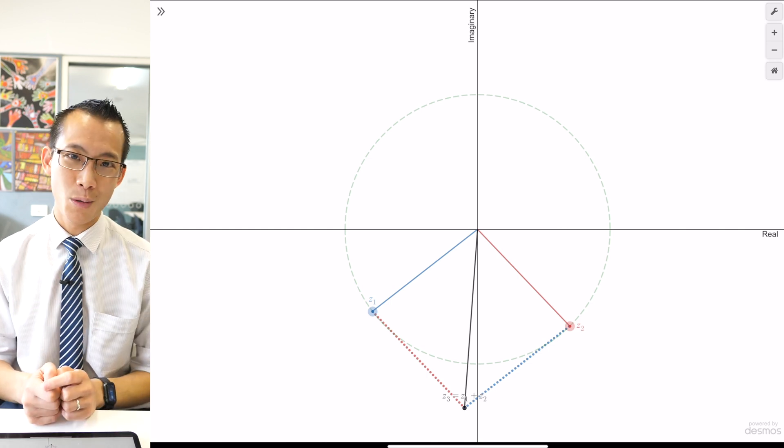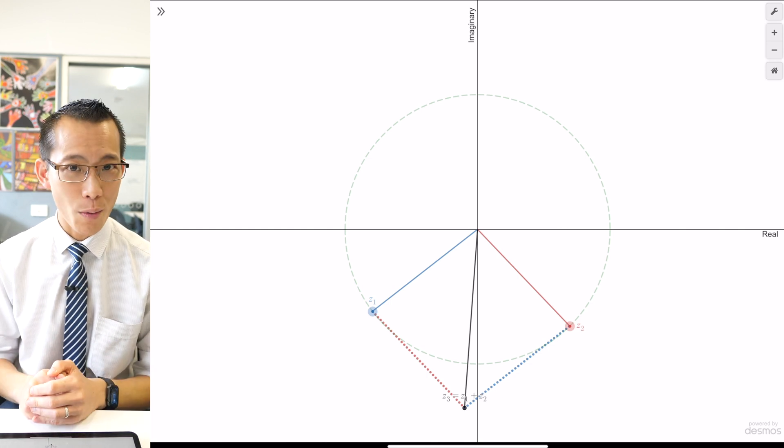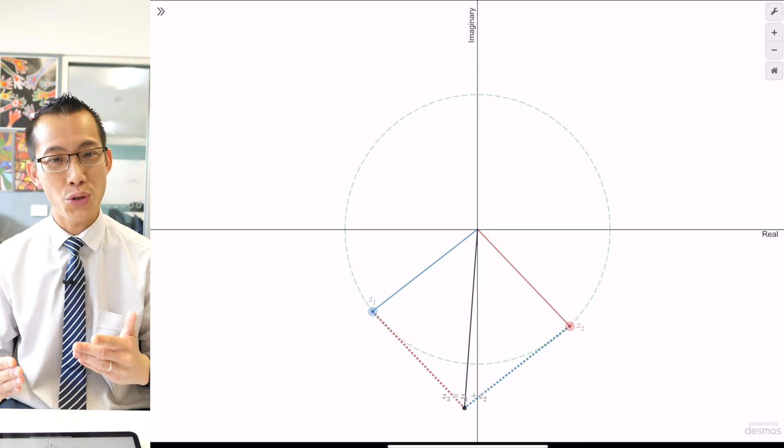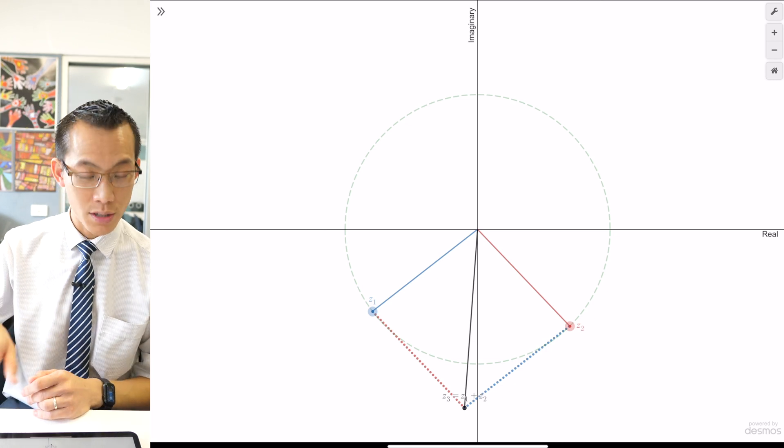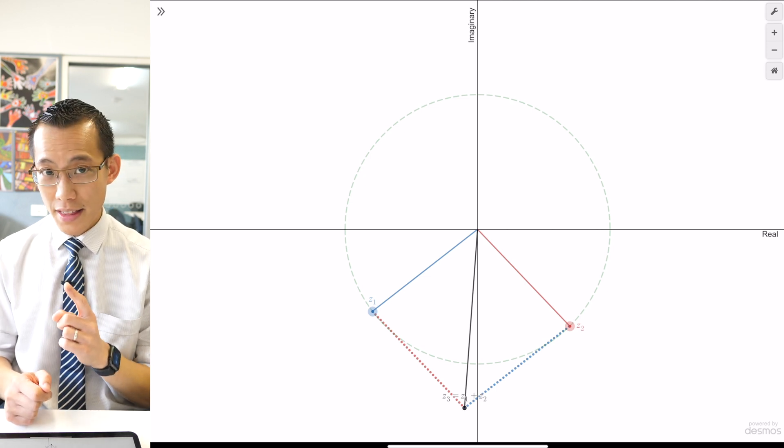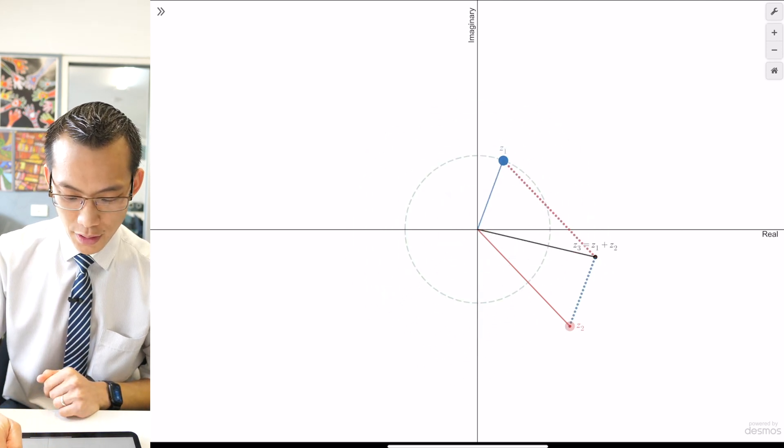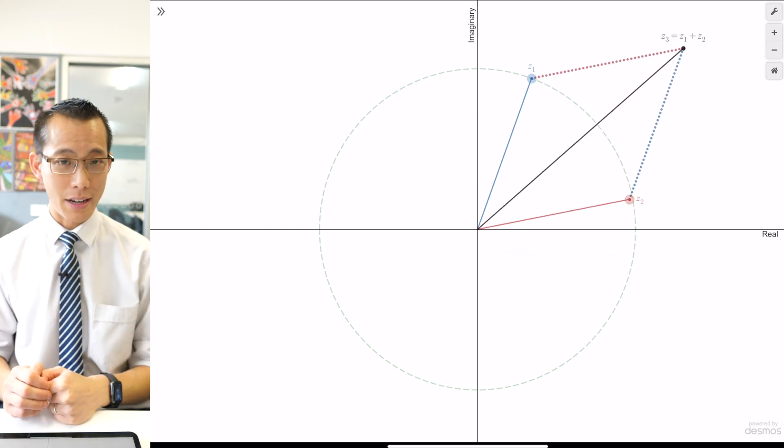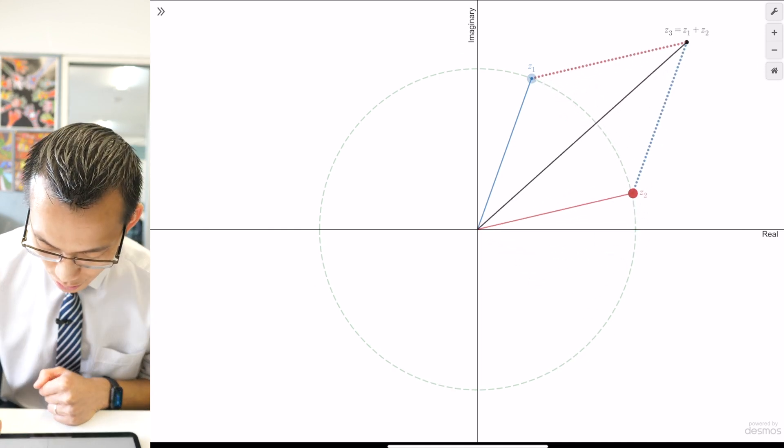But you don't always get a rhombus. Why are we getting a rhombus? It's because Z1 and Z2 have the same modulus. They're on the circumference of this circle. This is where I'm going to show you why it is important that you've got the same modulus for each one.